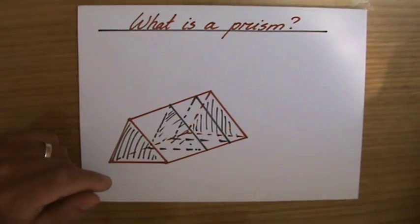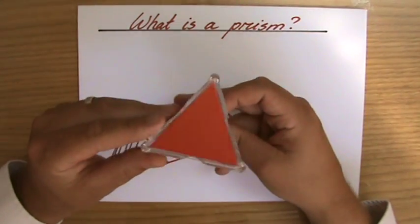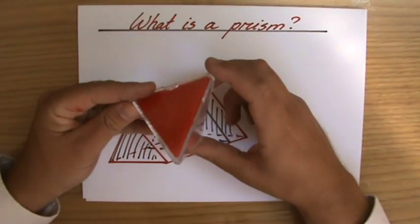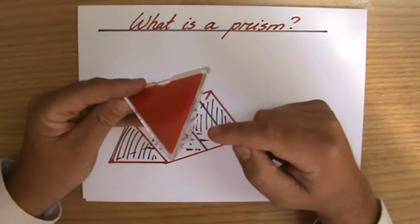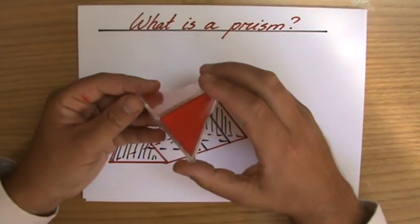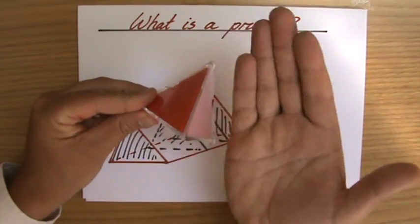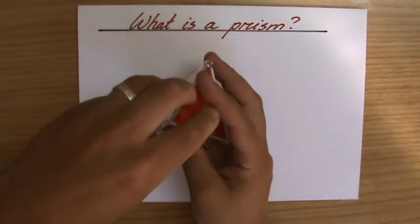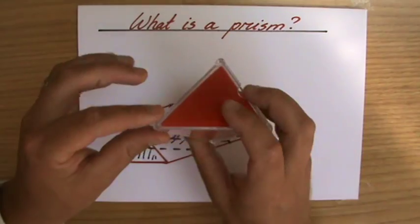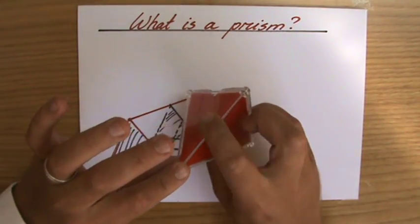Now, I want to give you an example of what is not a prism. For instance, this triangular pyramid. I do not have two faces which are parallel and identical. Although, these faces are identical, they're not parallel. If I would cut it here, all the way through, I wouldn't get the same triangle as this one. So, this is not a prism.